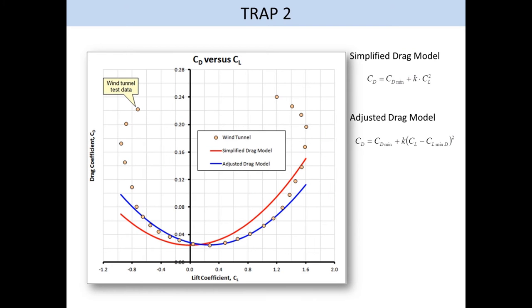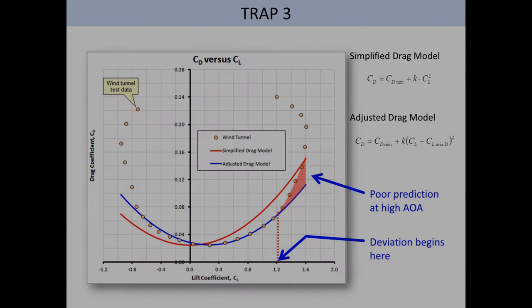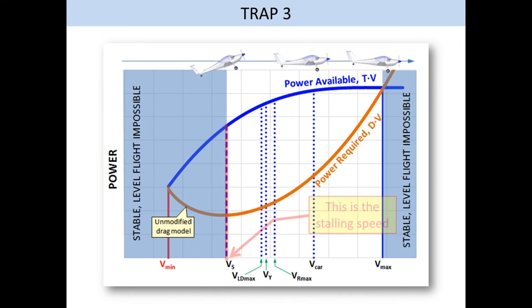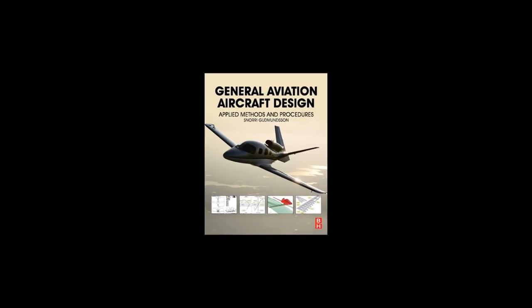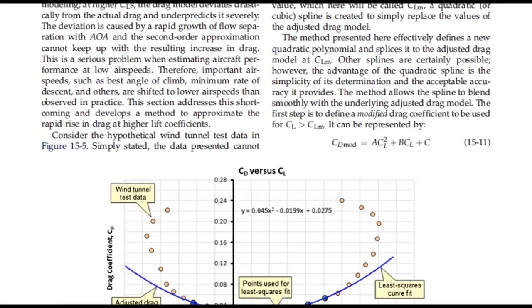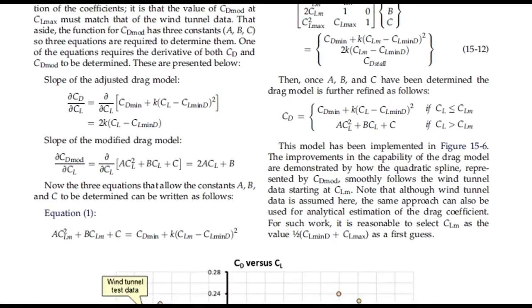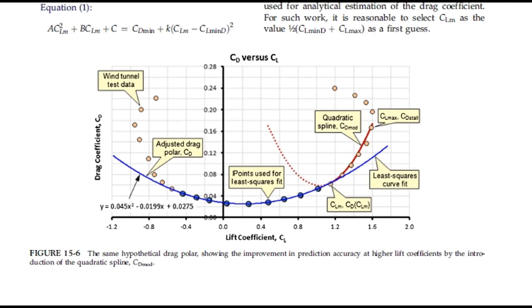The third trap involves the prediction of drag at high angles of attack. We saw in trap 2 that the drag prediction suffers at high angles of attack. Both the simplified and adjusted drag models do very poorly at high lift coefficients. This sharp rise in drag is due to sharp growth in flow separation, and the quadratic model used for drag modeling simply can't keep up with this increase. This leads to very poor low-speed performance predictions. For instance, look at this. The adjusted model indicates the minimum level airspeed is way below the stalling speed. This represents an impossible scenario. The fix? My book offers an easy-to-use correction that creates a spline that is used when the lift coefficient exceeds a certain value.